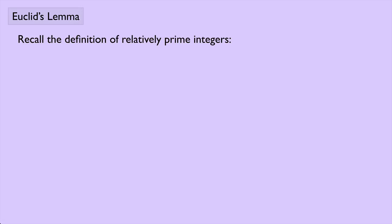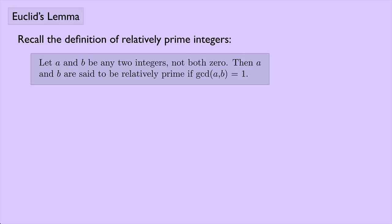Recall what it means to be relatively prime. Let a and b be any two integers, not both zero. Then a and b are said to be relatively prime if the greatest common divisor of a and b is one. So that's relatively prime — it concerns two integers.